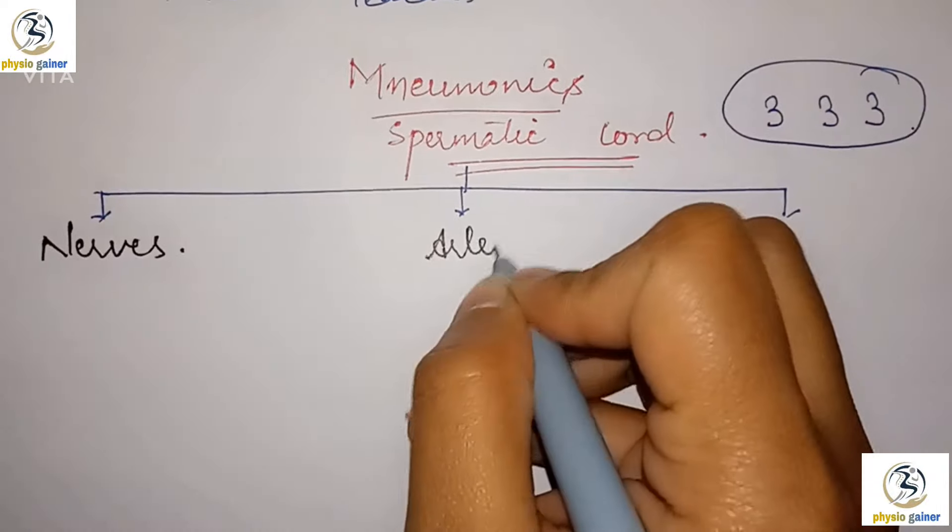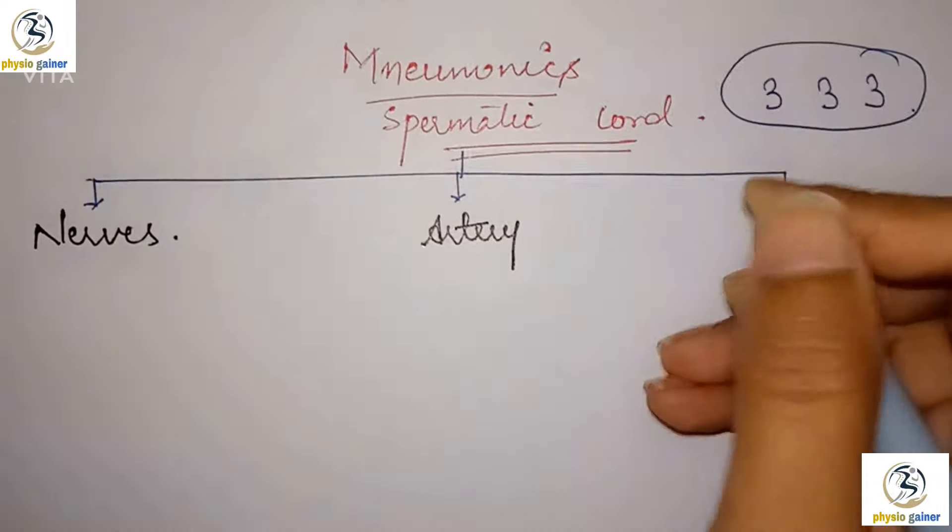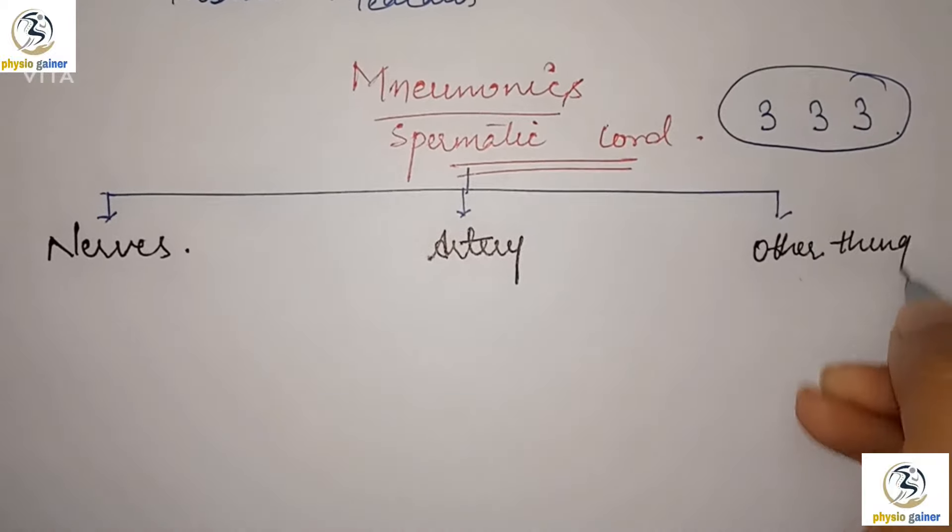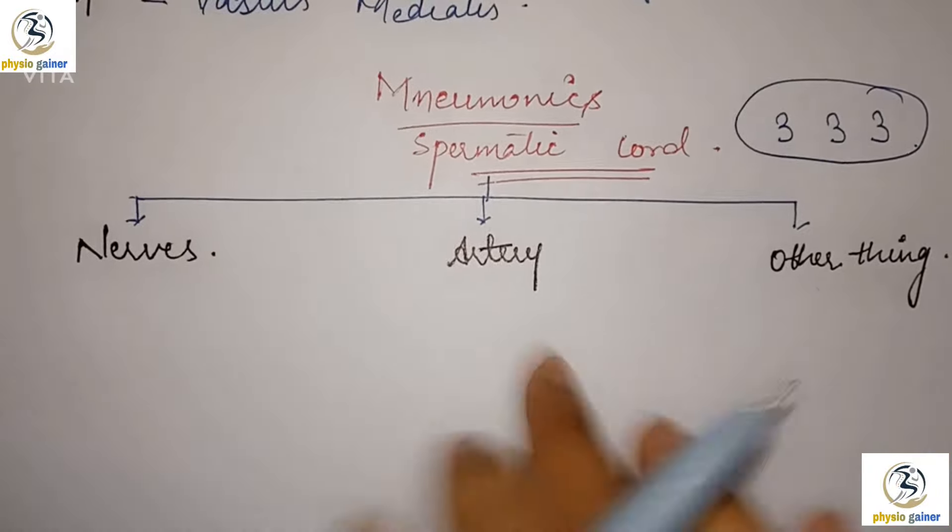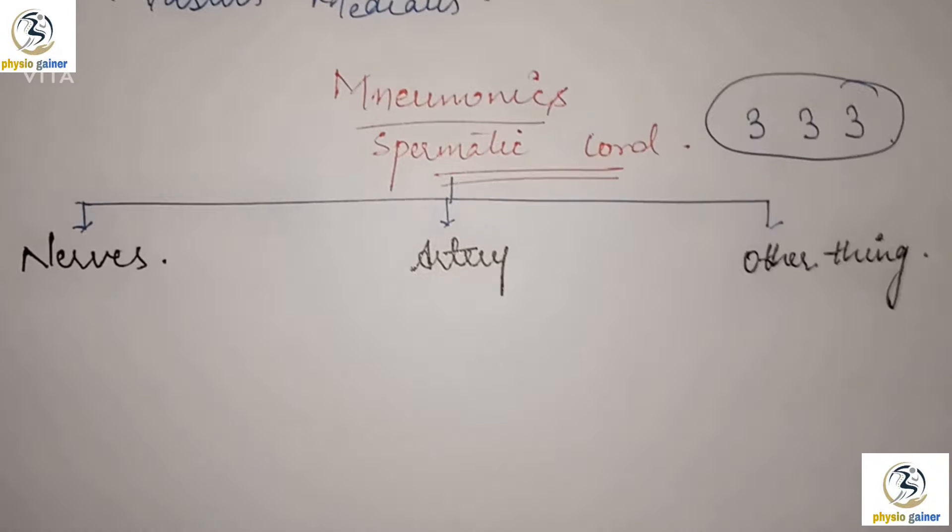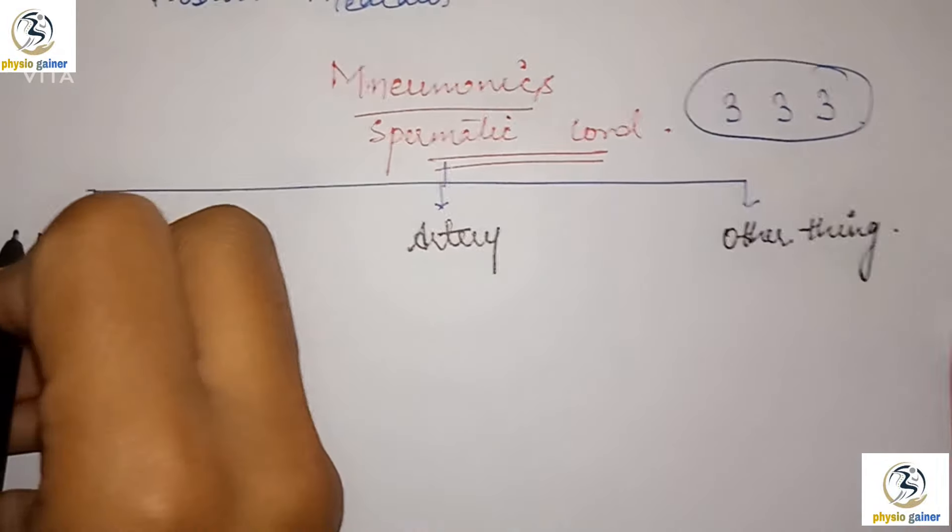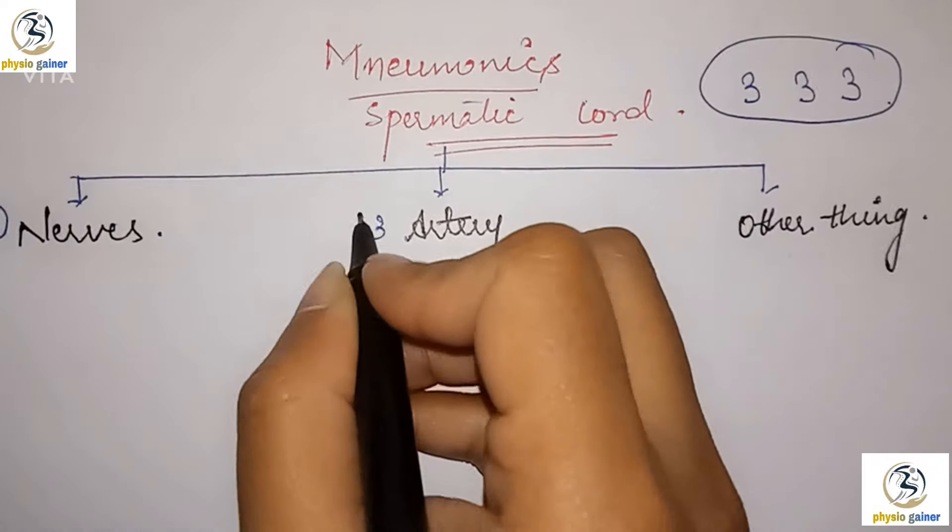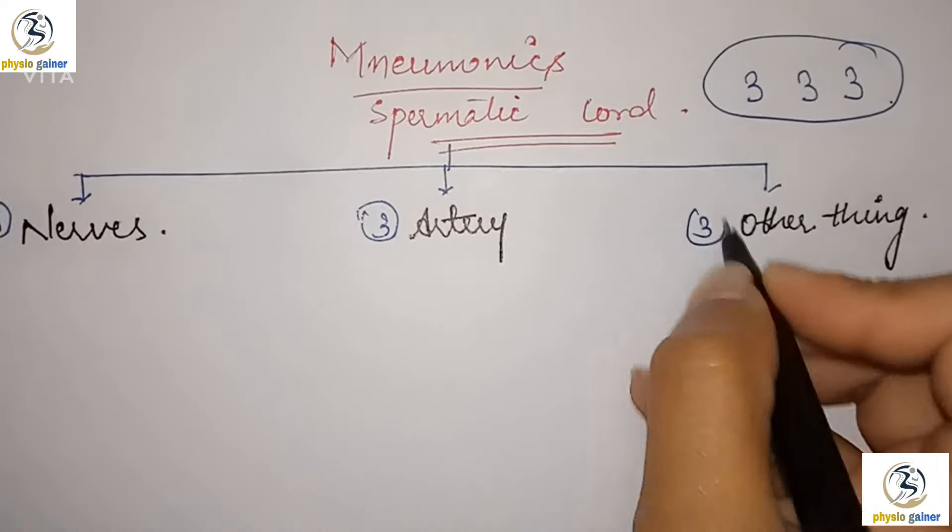That is nerves, arteries, and other things. So the first thing is 3. There are 3 nerves, 3 arteries, and 3 other things.